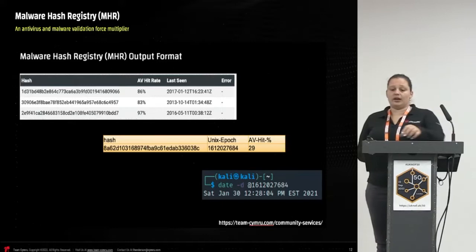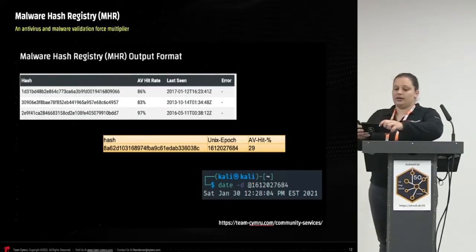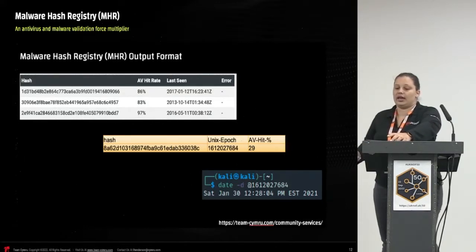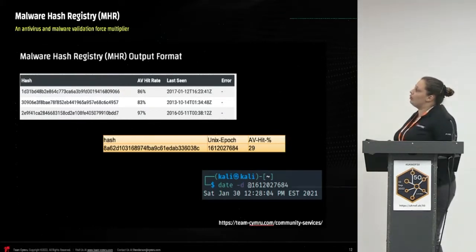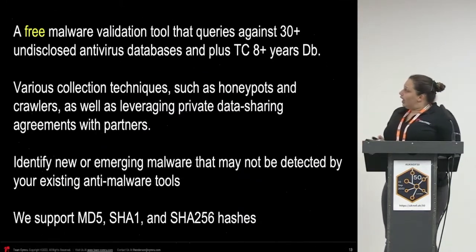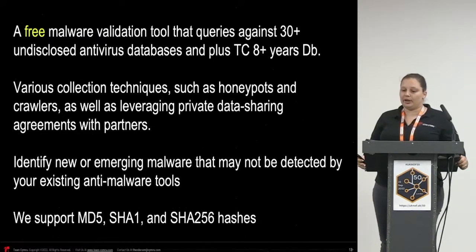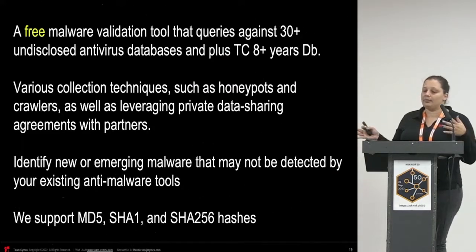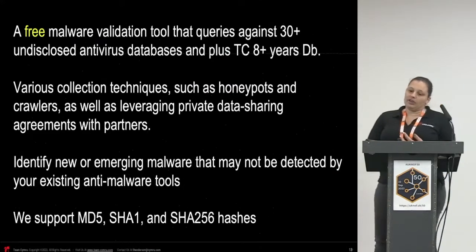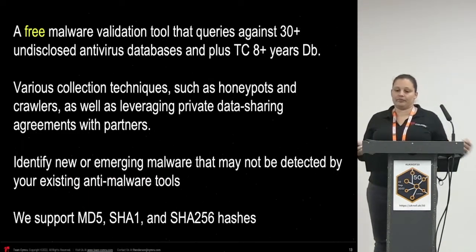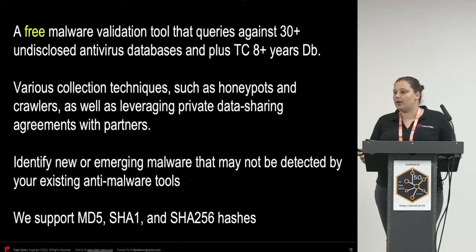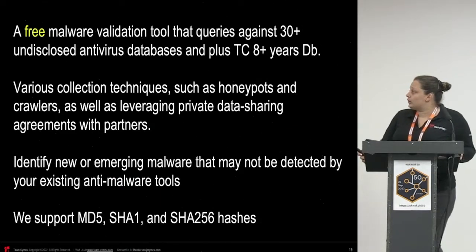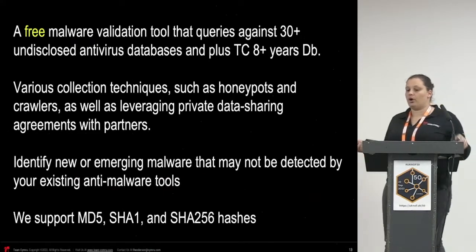Our newest product in the community services is the Malware Hash Registry. This is a free malware validation tool that searches against more than 30 antivirus databases and more than eight years of Team Cymru databases. MHR serves as a force multiplier for malware detection and validation — it's like having a big army of malware detectors giving you insight through a single antivirus solution. Researchers and analysts can submit their malware hashes via the MHR portal to get near real-time results showing the percentage of malware databases containing signature matches. This product can also be integrated into existing workflows to augment malware detection.